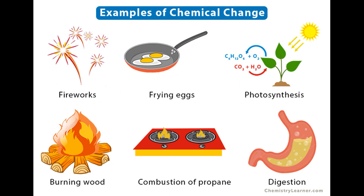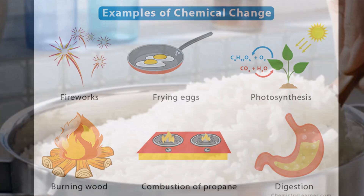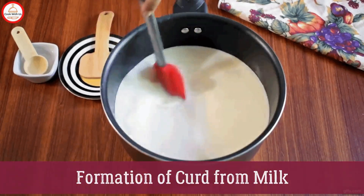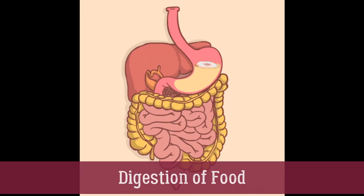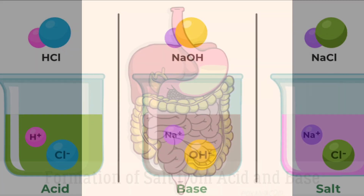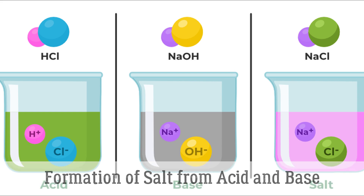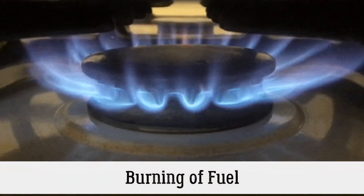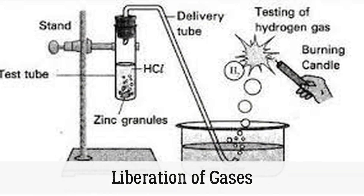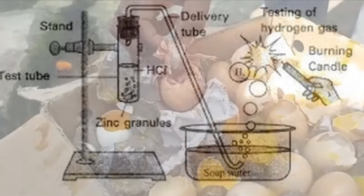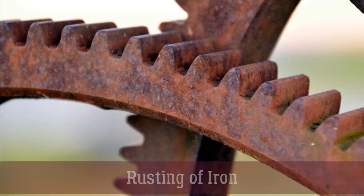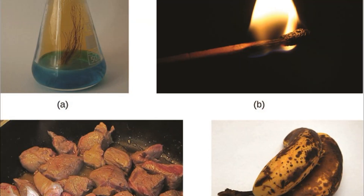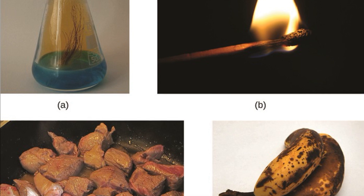The cooking of rice is among some examples of chemical change.